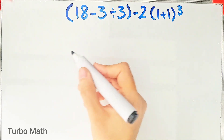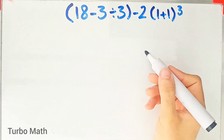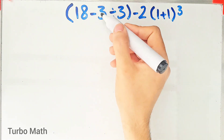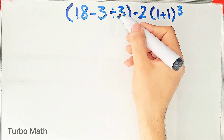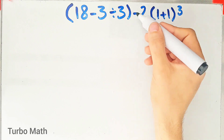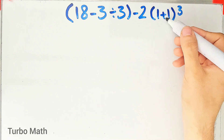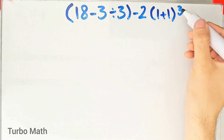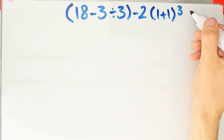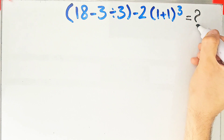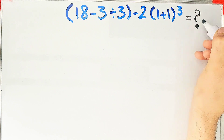Hi friends, welcome to Turbo Mass channel. Open parenthesis: (18 minus 3 divided by 3) close parenthesis, minus 2, then times (1 plus 1), then all of them to the power of 3. What is the answer to this question?